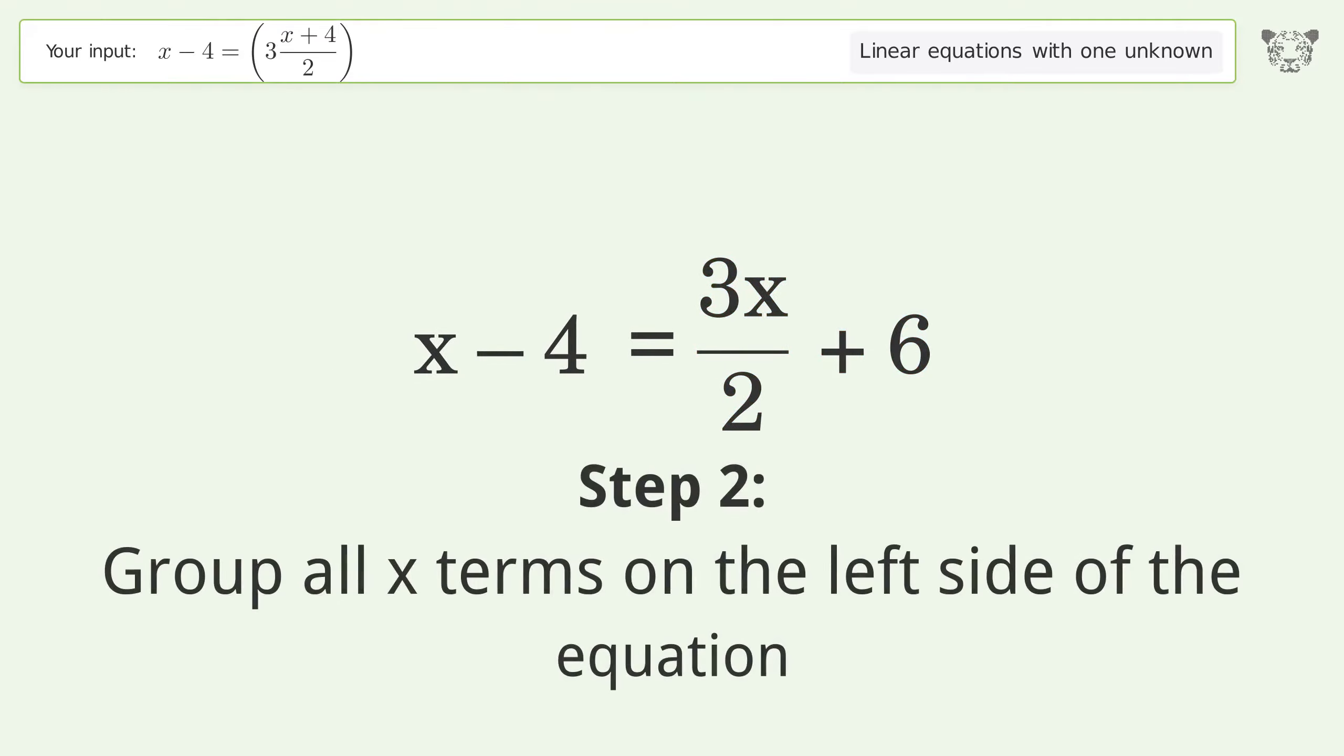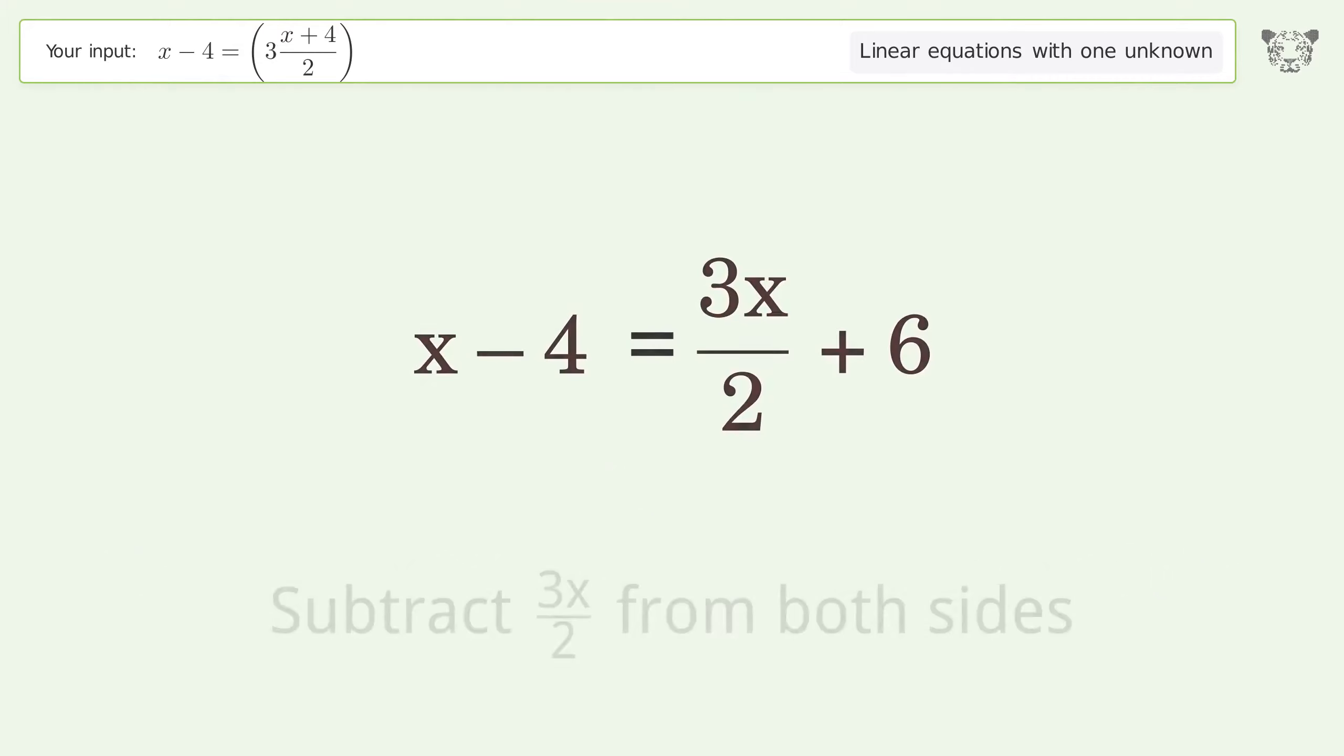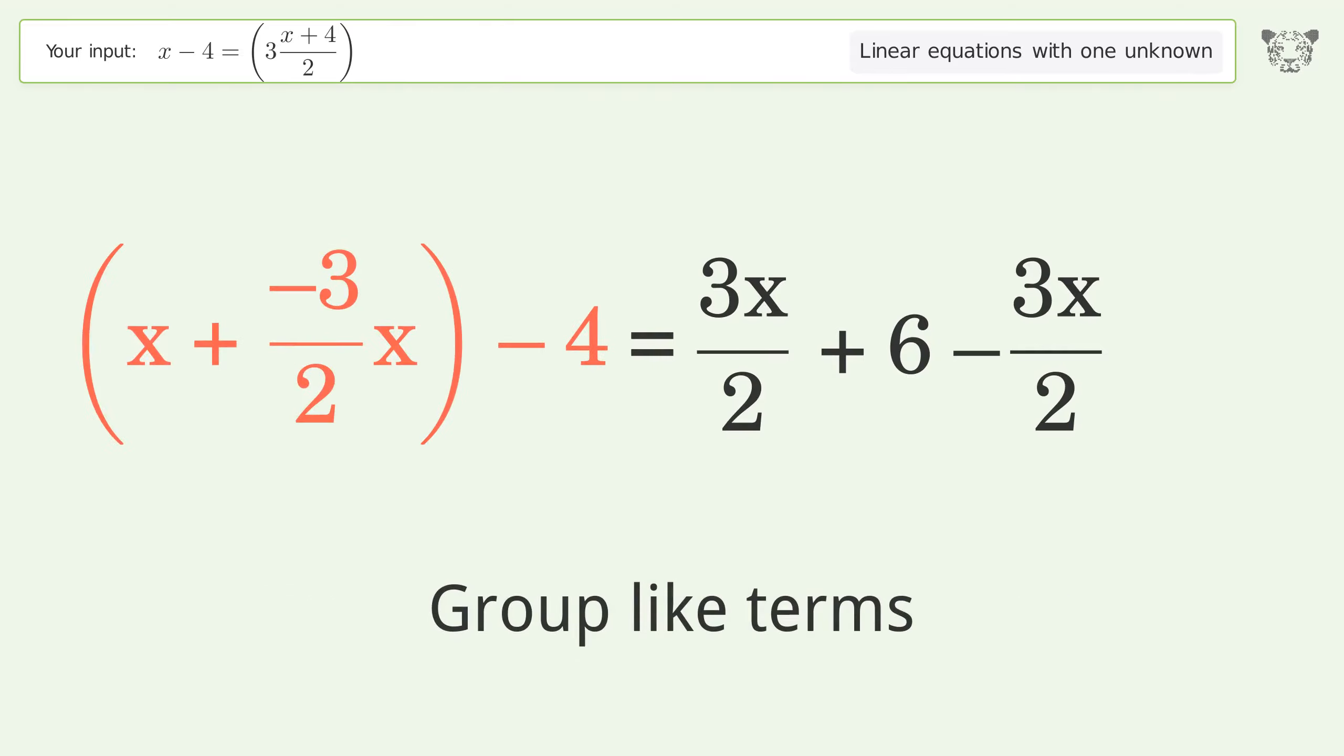Group all x terms on the left side of the equation. Subtract 3x over 2 from both sides. Group like terms. Group the coefficients.